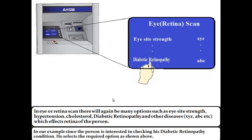In the eye or retina scan, there will again be many options such as eyesight strength, hypertension, cholesterol, diabetic retinopathy, and other diseases which affect the retina of the person. In our example, since the person is interested in checking his diabetic retinopathy condition, he selects the required option as shown above.